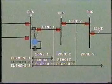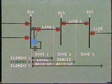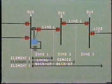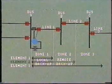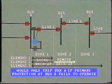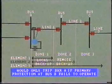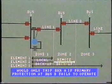The second element also provides remote backup in the case of a fault on bus B or out on line two. This would only operate and trip out breaker A in case the primary protection at bus B failed to operate.